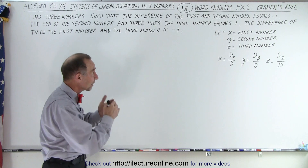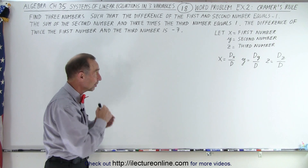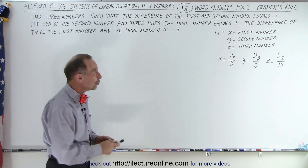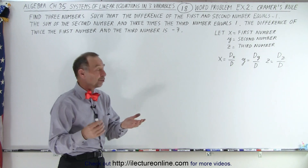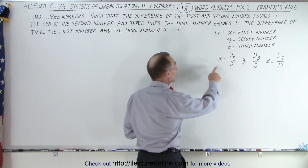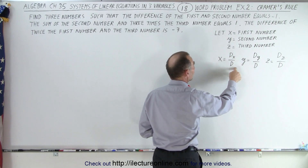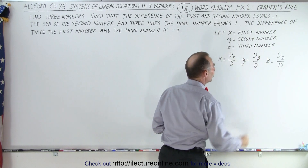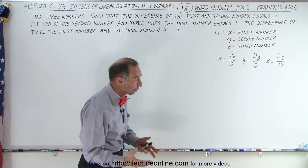We have x, y, and z as the first, second, and third numbers. We're going to use Cramer's rule to solve that. To find x, y, and z with Cramer's rule, we have D sub x over D, D sub y over D, and D sub z over D — D being the determinant.